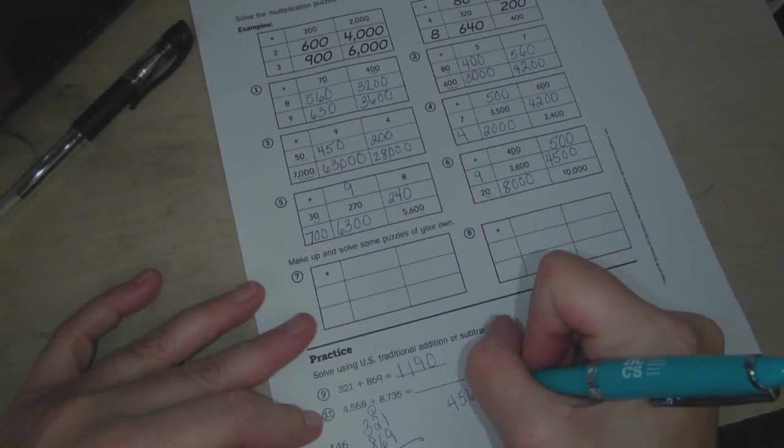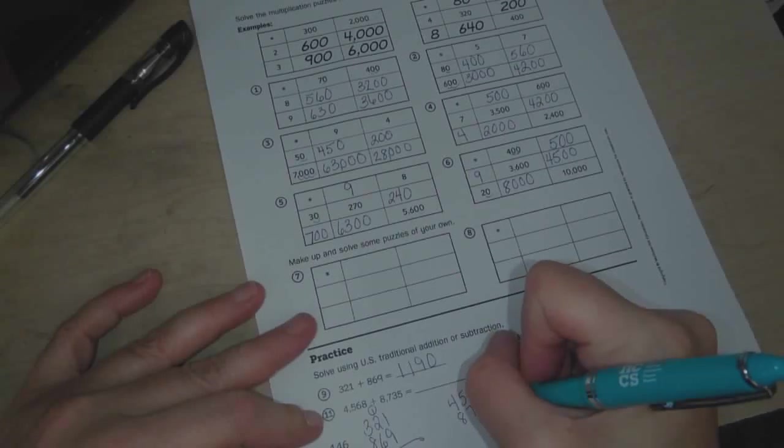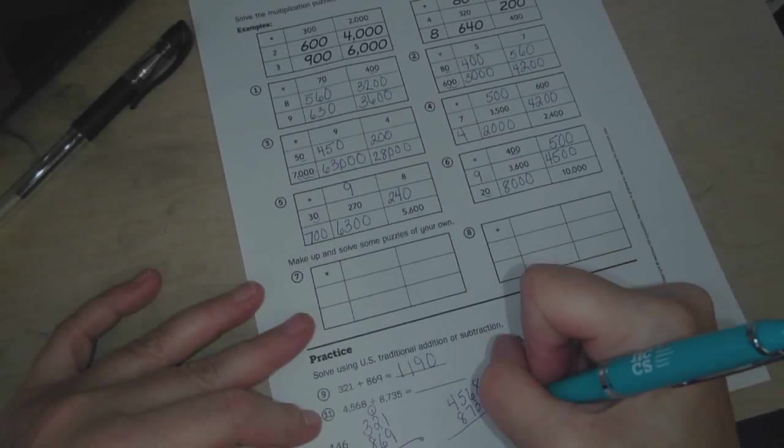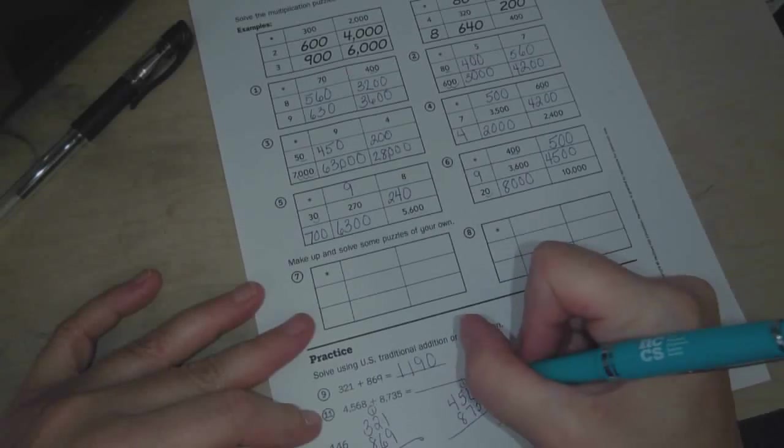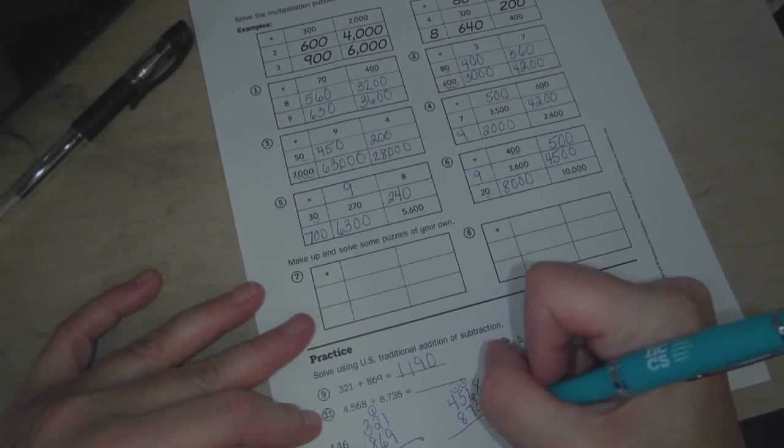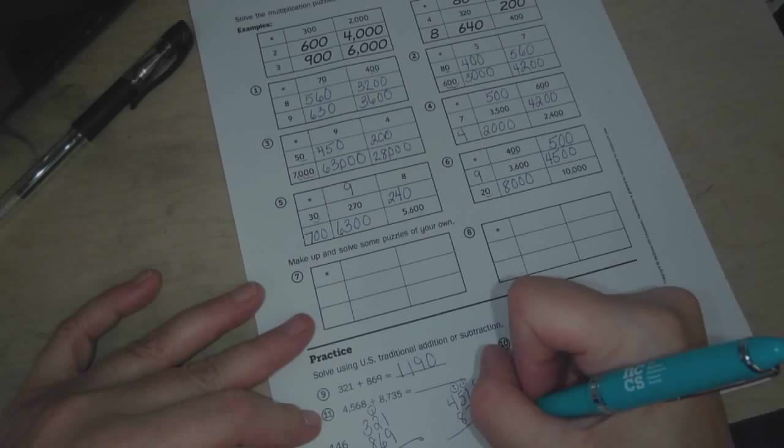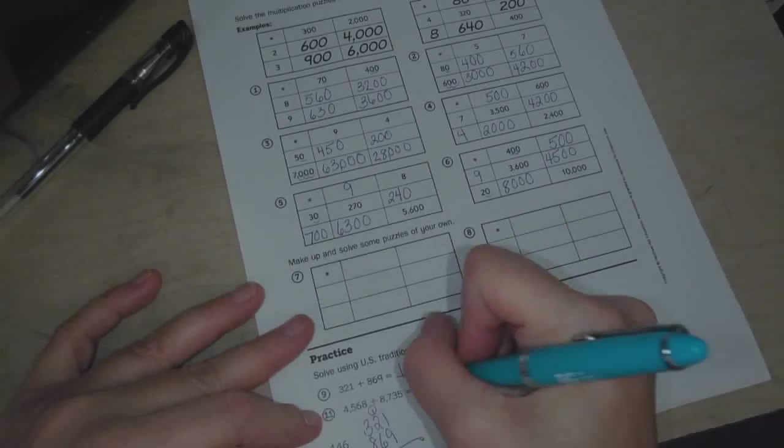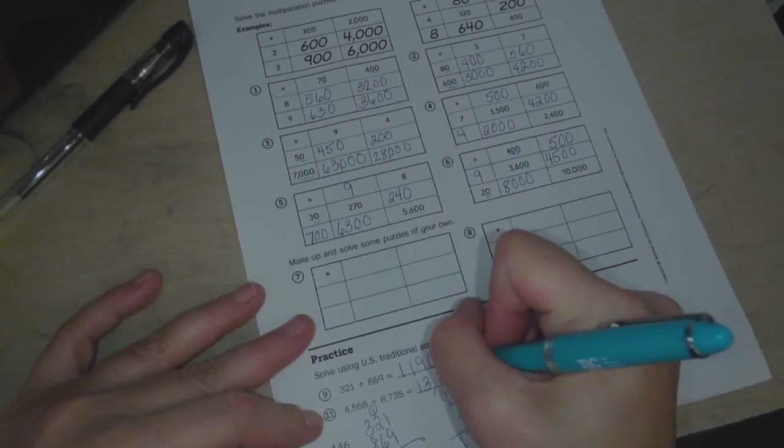4, 5, 6, 8. 8, 7, 3, 5. 8 plus 5 is 13. Carry the 1. 6, 7, 8, 9, 10. 7, 8, 13. 8, 9, and 4 is 13. So it's 13,303.